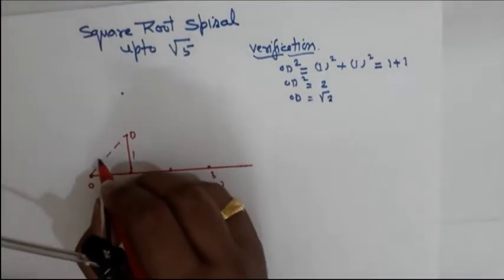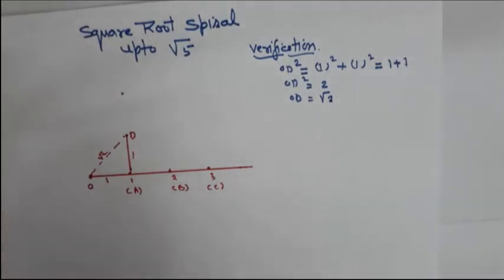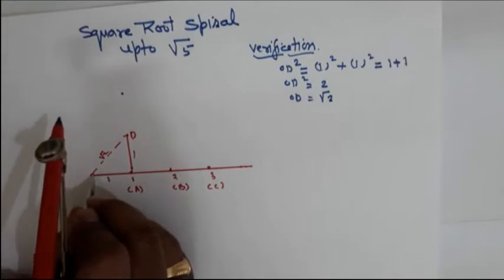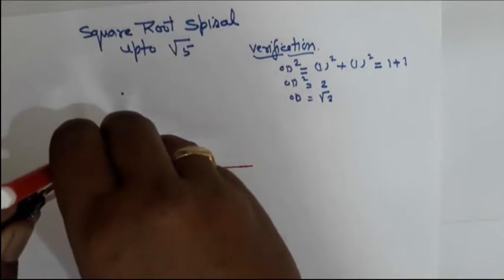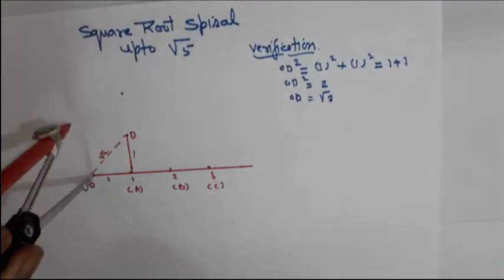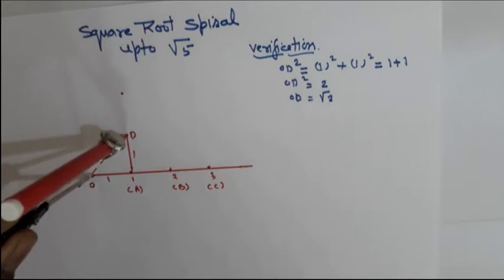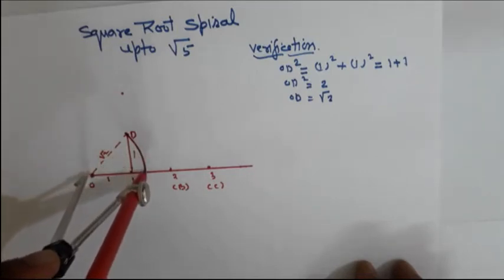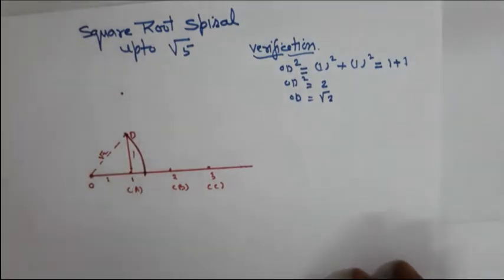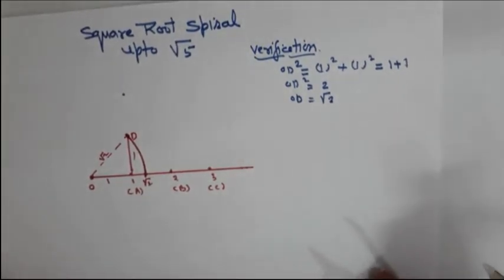Your square root of 2 construction is now done. The next step is important: put the needle of the compass at point O and the pencil at point D. Draw an arc. The point where this arc cuts the straight line will represent square root of 2 on the number line. Your spiral up to square root of 2 is now made.